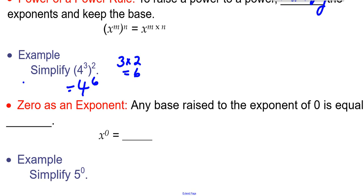The last rule we looked at was when the base of a power is raised to the exponent of 0. Any time that happens, we get an answer of 1. So any base raised to the exponent of 0 is 1. For example, 5^0 equals 1.